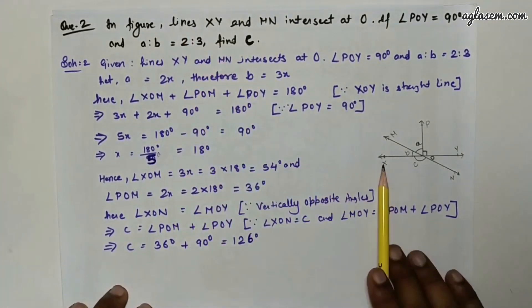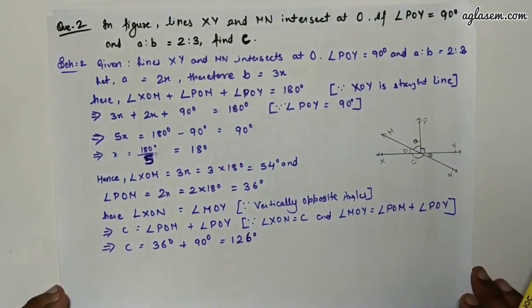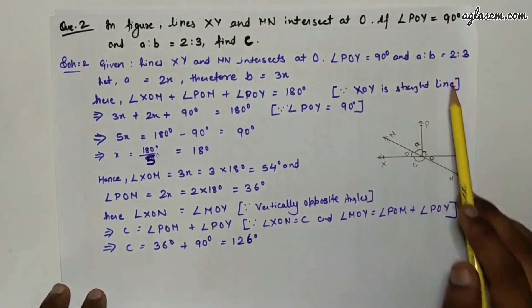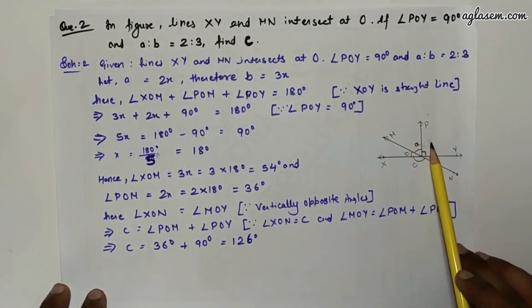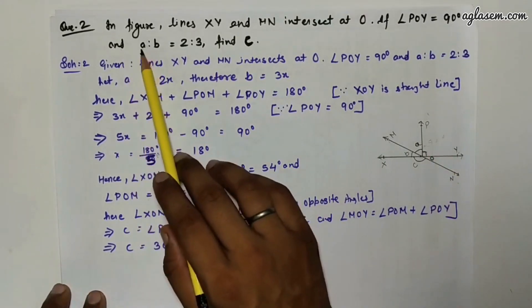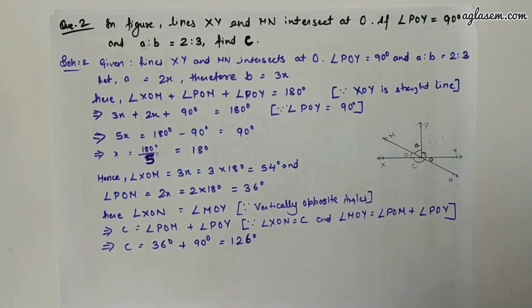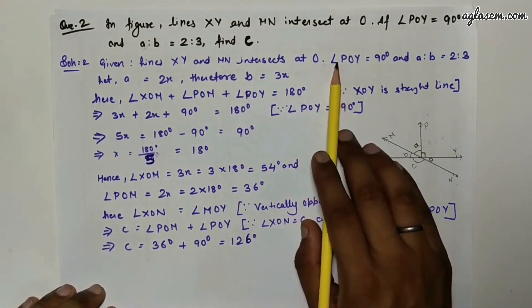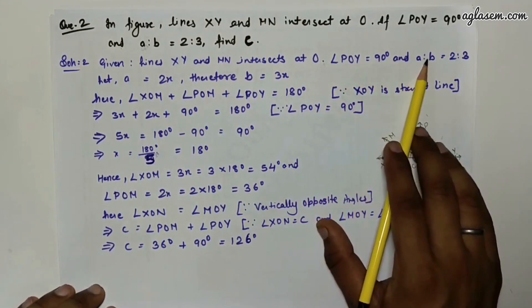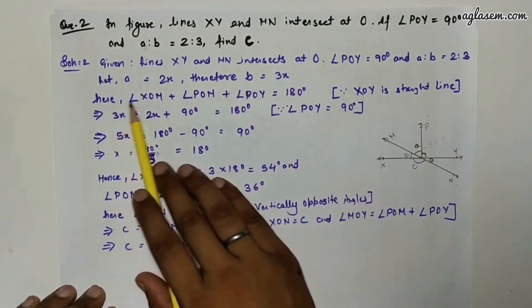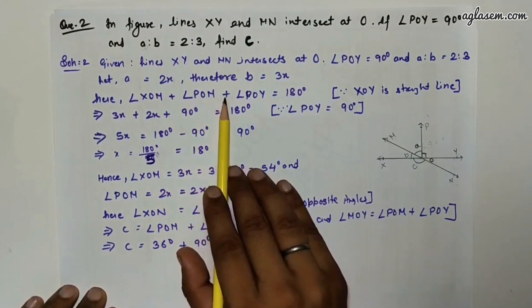Question 2: Lines XY and MN intersect at point O. If angle POY = 90° and a:b = 2:3, find angle C. Let a = 2x and b = 3x.